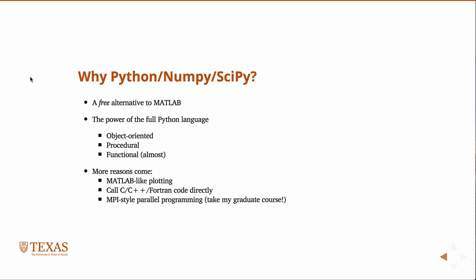There's more reasons to come. We're going to talk about MATLAB-like plotting and other plotting packages in the next lecture. I mentioned briefly the ability to call C++ and Fortran code directly from Python. This makes it a really attractive feature because you can profile your code, figure out where it's slow, and re-implement those areas in compiled languages to get great speed up. Another great thing is that you can do MPI - Message Passing Interface, the de facto standard for distributed memory parallel computing. You can do this style of parallel programming within Python, and that's for sure you cannot do from MATLAB, certainly not for free. If you have any interest in this, you should probably look into my graduate course.